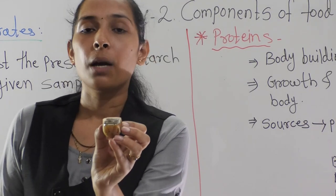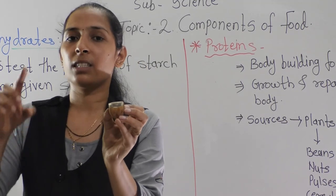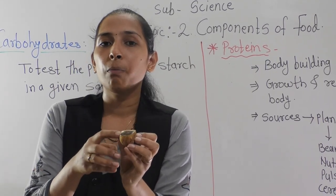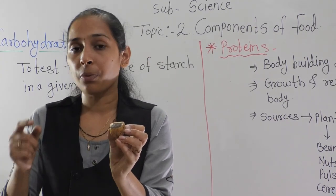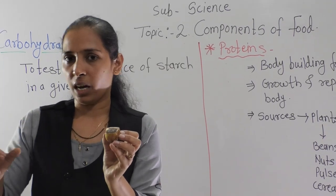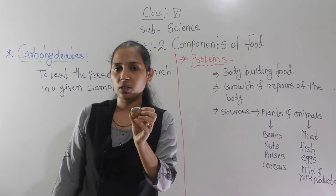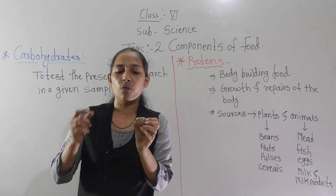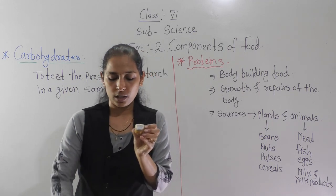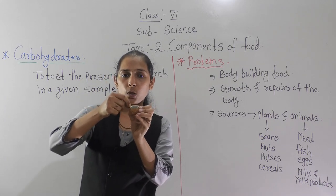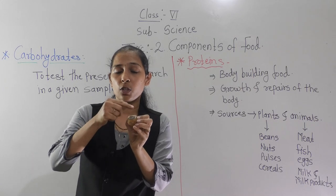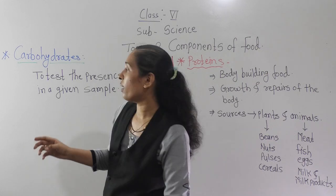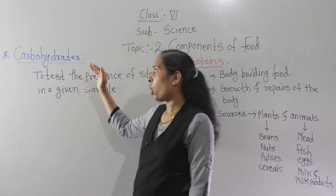Why did it turn blue-black? Because the potato contains starch, and when starch comes into contact with iodine, it gets converted to blue-black colour. So this is the confirmatory test for starch, which tells us that the potato contains starch. This proves that potato contains starch, and starch is nothing but one type of carbohydrate.